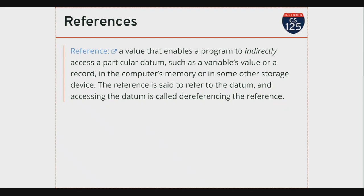Let me introduce you to the idea of a reference. References are super powerful — you see them all over the place in computer science. A lot of what you use on a day-to-day basis: website names, handles on Discourse — these are references. So what is a reference? A reference is a value that allows a program to indirectly refer to something — to a particular datum — such a variable's value or record in the computer's memory or some other storage device. The reference is said to refer to the datum; in this case, our datums are objects. Accessing the object requires dereferencing the reference, or sometimes 'following' a reference.